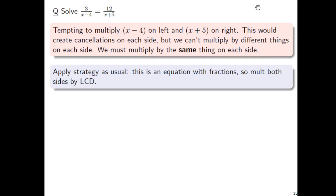Don't reinvent the wheel, do the same thing. This is an equation with fractions, so multiply both sides by the LCD. Here, the LCD of the two denominators, x minus 4 and x plus 5, well that LCD here just happens to be their product, x minus 4 times x plus 5. So we're just going to multiply by that.